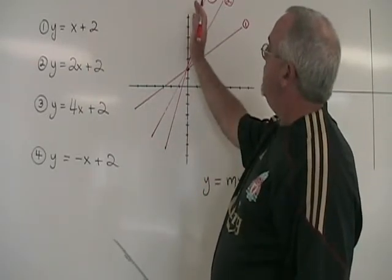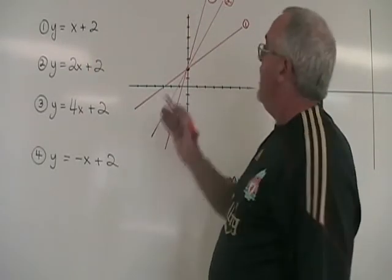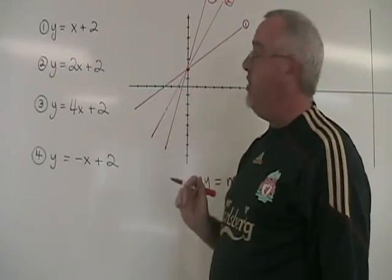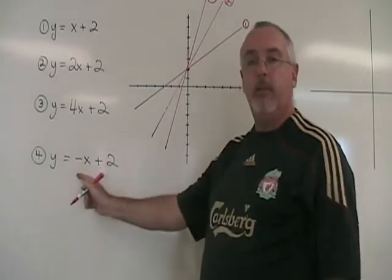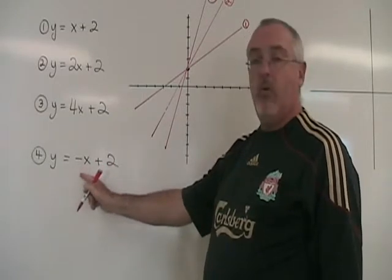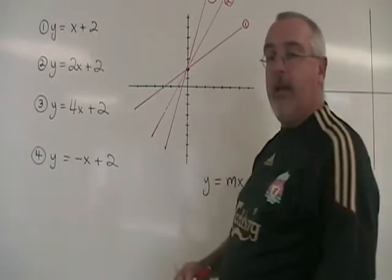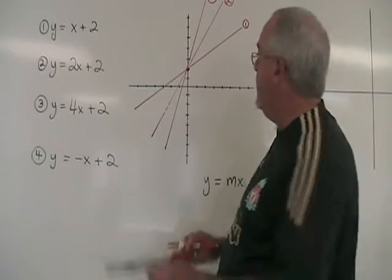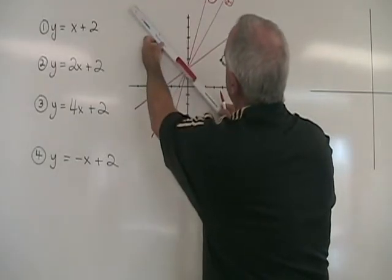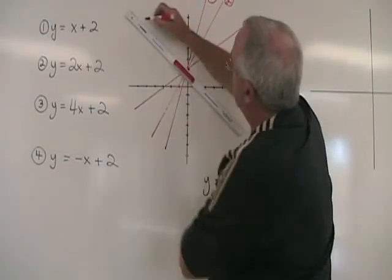And then, once we tilt past the y-axis, our line starts to have a negative slope. Equation 4 is an example of that. It has a slope m of negative 1, so it will again form a 45-degree angle with the x-axis, but tilted in the other direction.